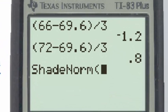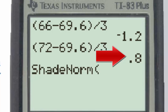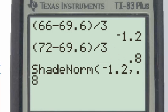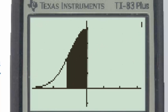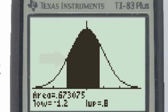The input in the shade normal function should always be that the smaller of the two numbers goes first and the larger goes second, so that the input is going to be negative 1.2, then a comma, and then 0.8. When we hit the enter key, the graph of the distribution is drawn. We see the shaded area corresponding to the probability, and the area, which is our probability, is given to six decimal places.